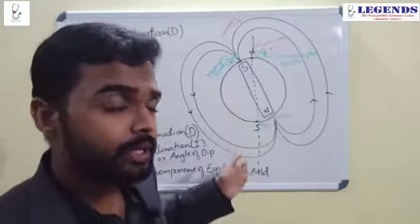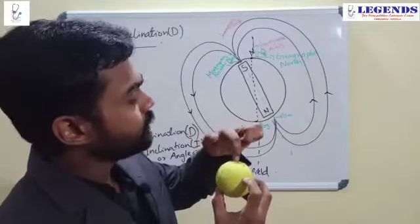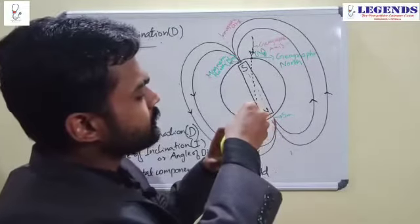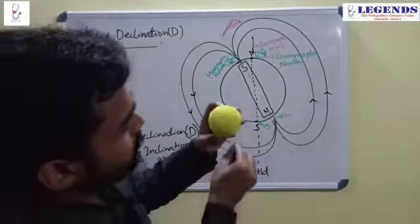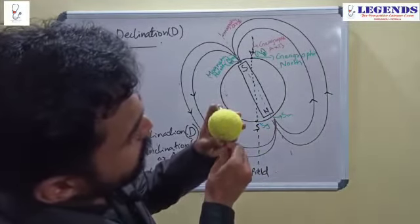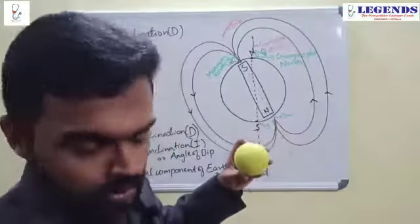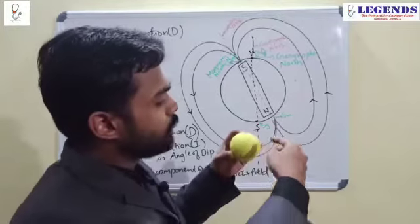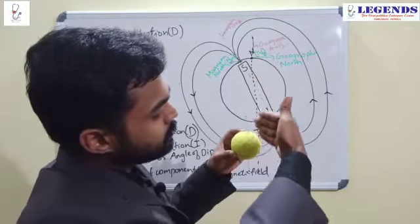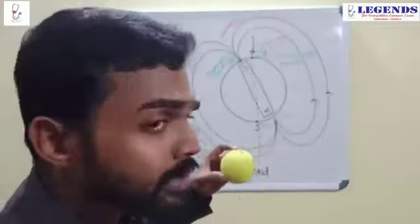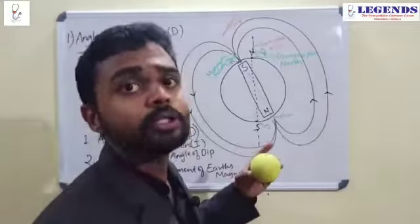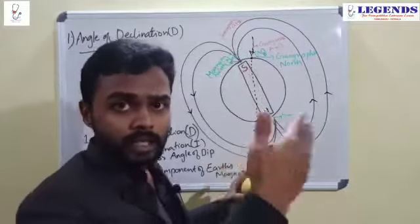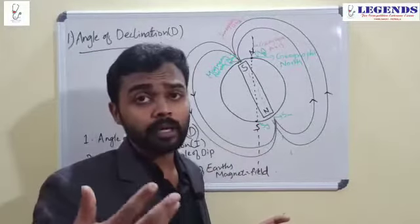In order to understand it well, you have to think 3D. This is the Earth, with the geographic north pole and geographic south pole. Considering a place here on Earth — if I cut vertically along this geographic axis through that place, I get a plane called the geographic meridian. And similarly, if I cut through the magnetic axis at any place, we get a plane called the magnetic meridian.